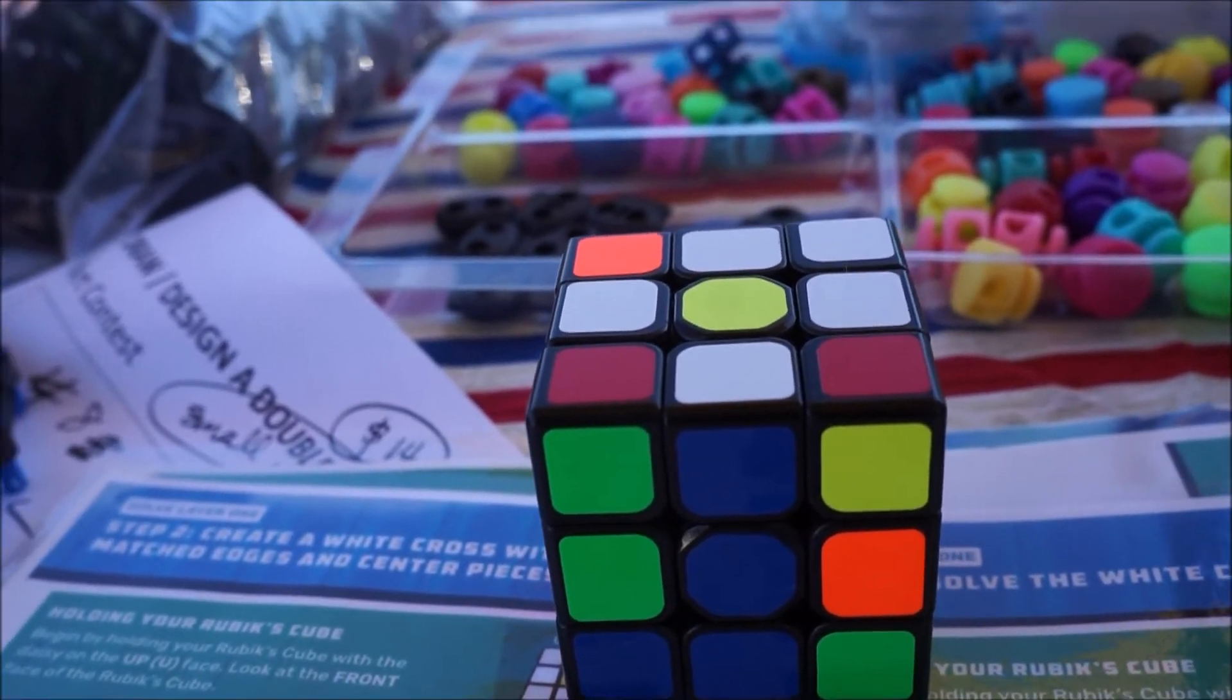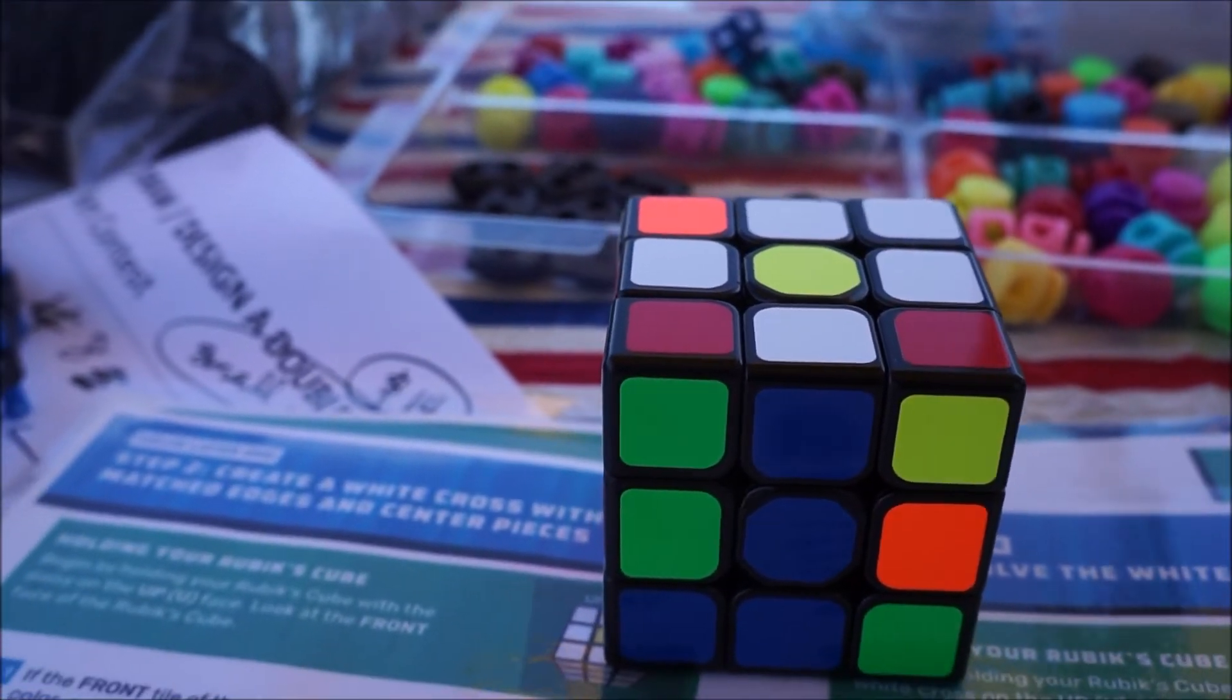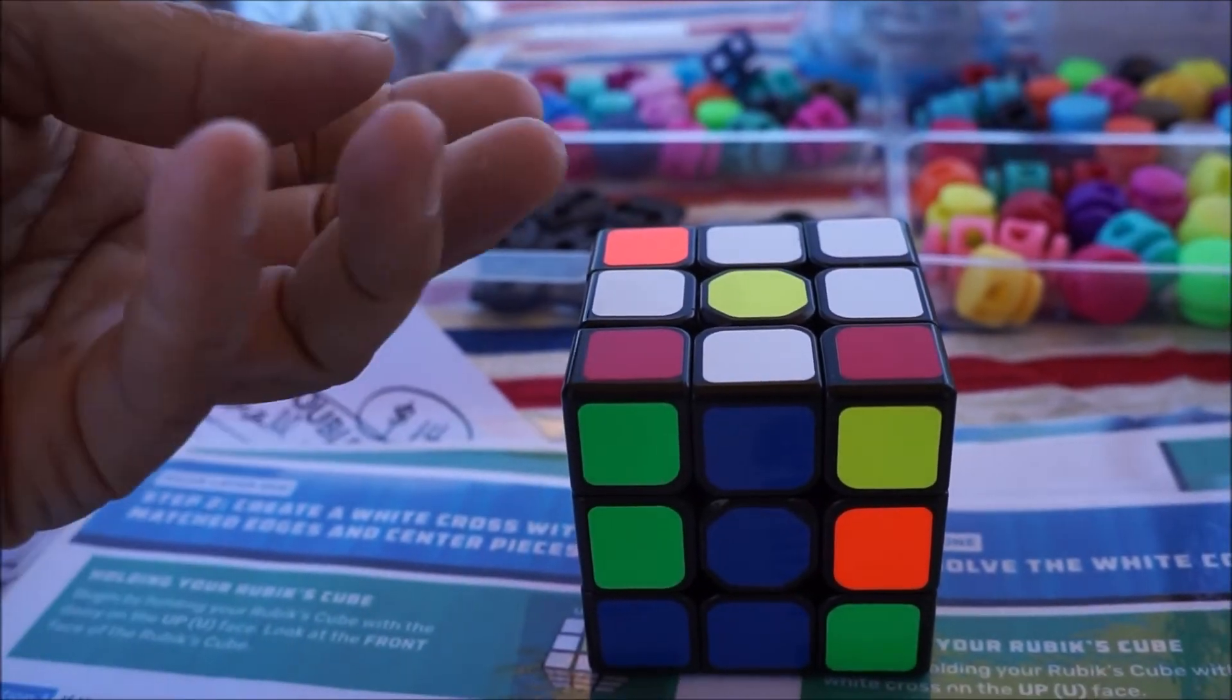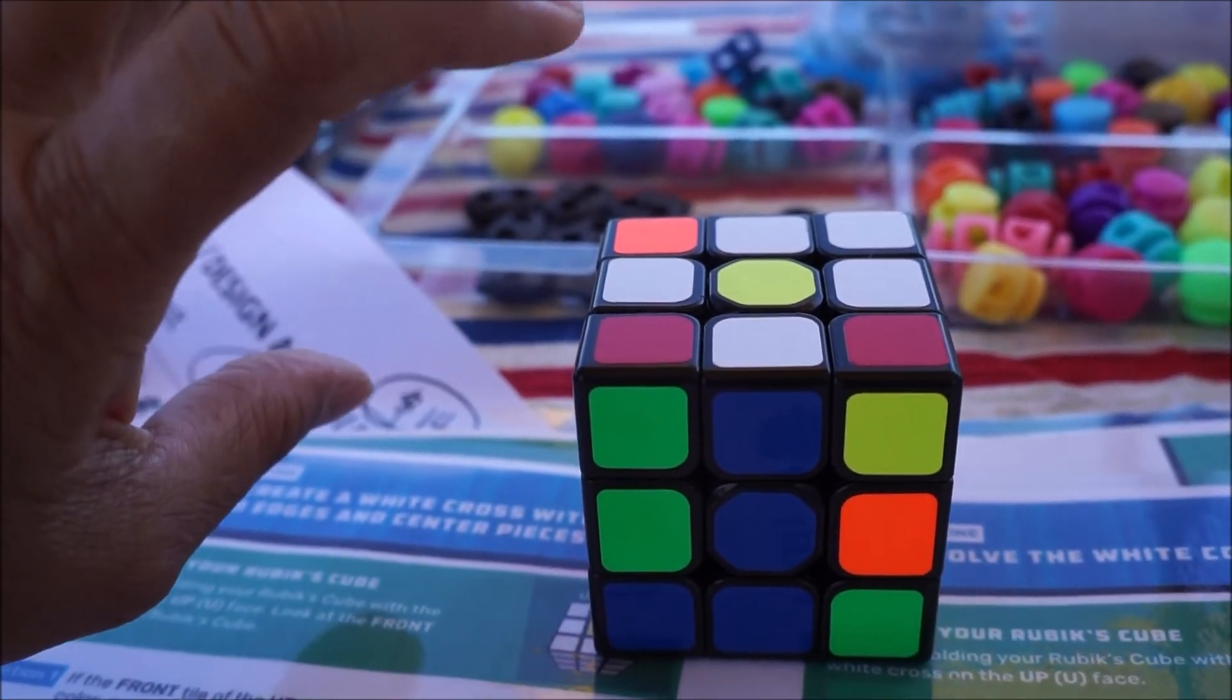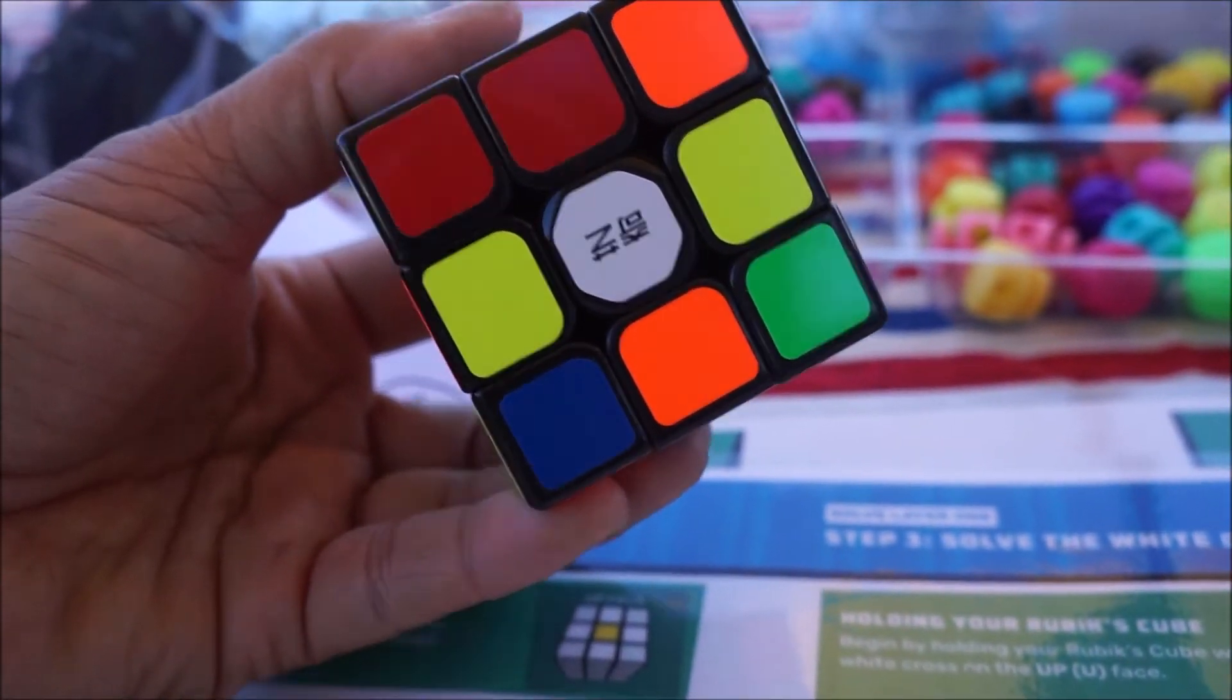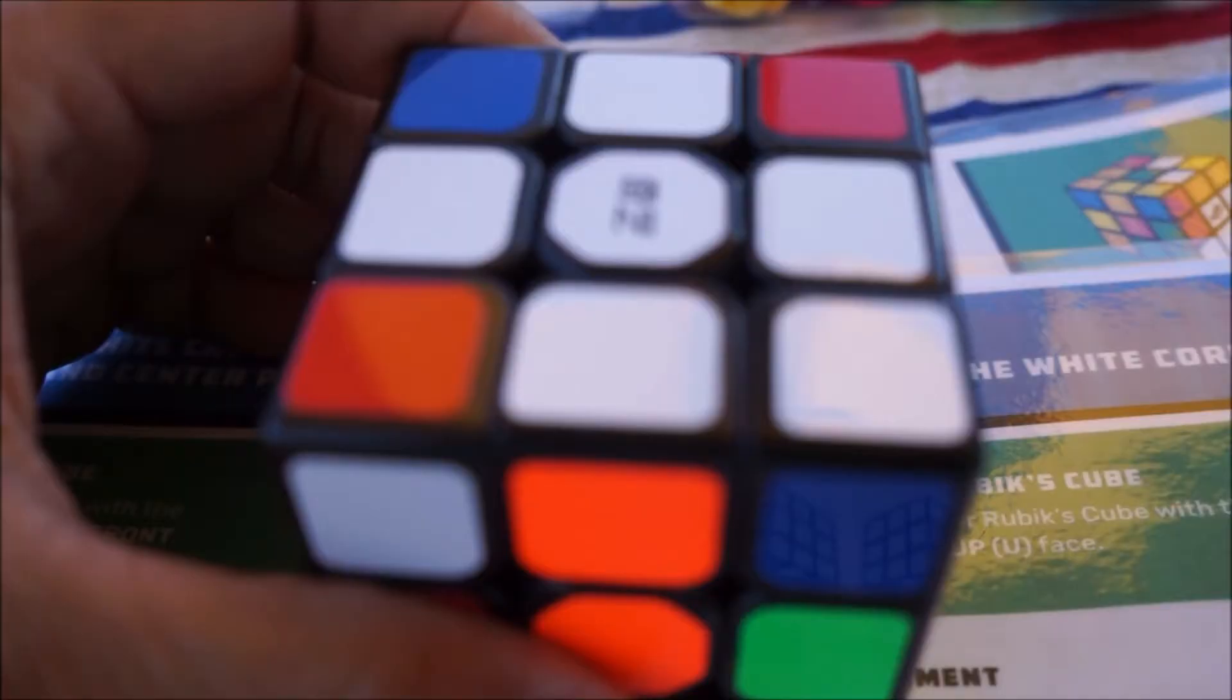Okay, page six. Step two, create a white cross with matched edges and centerpieces. So now what it says is for each of these, do twice a turn, two turns, so that it ends up at the bottom where the white is. So I'm going to do that now, and then show you the result.